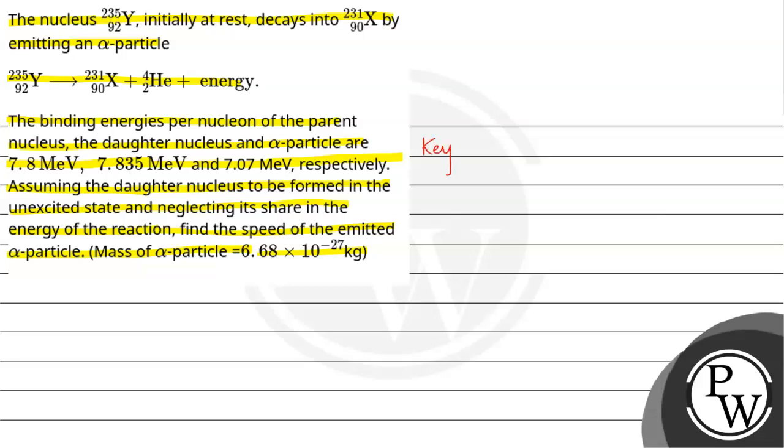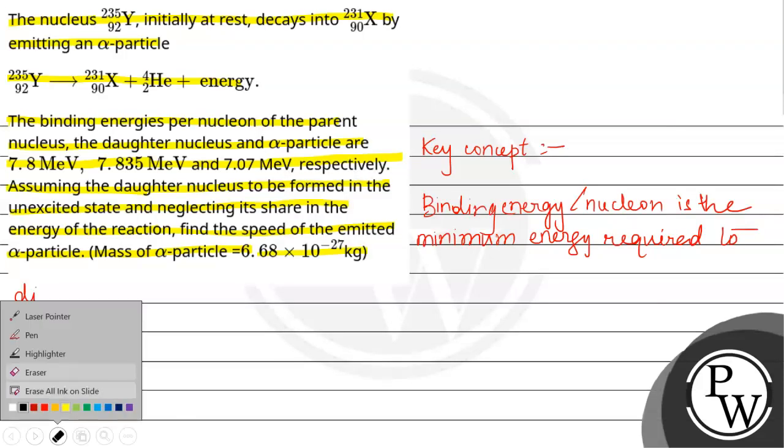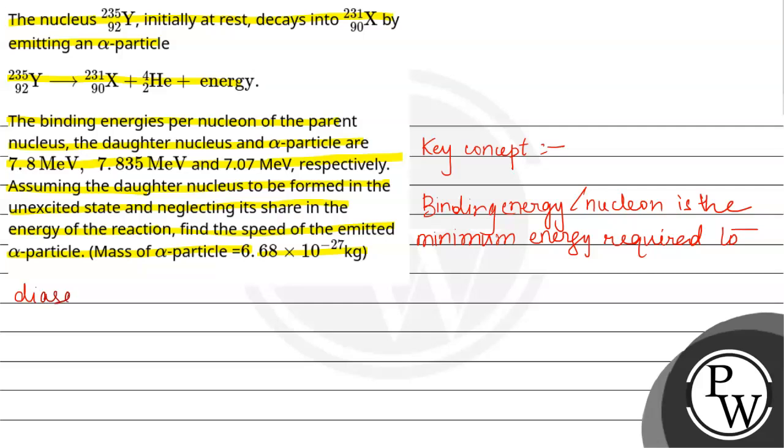Let us have the key concept for the given problem. The key concept here is binding energy per nucleon, which is the minimum energy required to disassemble the nucleus of an atom.